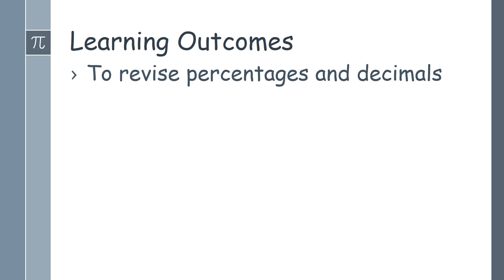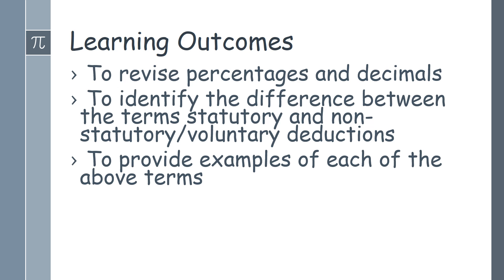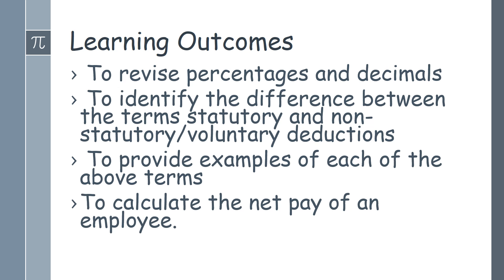The learning outcomes for this class: we're going to revise percentages and decimals — something students would have already covered, probably in first year if they used a common syllabus, and likely haven't seen since — so we'll do a quick recap as it plays a crucial part. We'll look at some of the main terms used, which is important to develop students' vocabulary and their literacy with keywords as part of the new junior cycle. Then we're going to find examples of those terms and calculate the net pay of an employee.